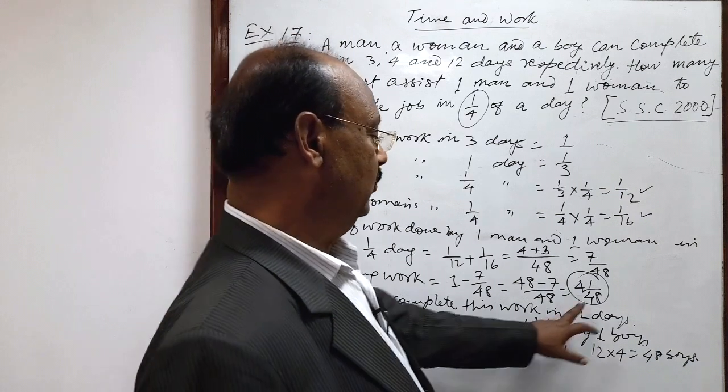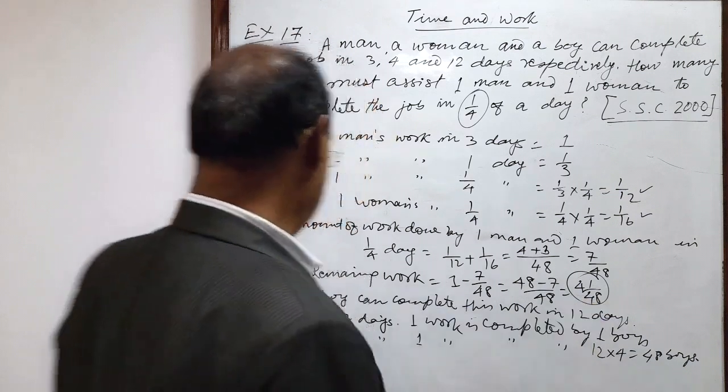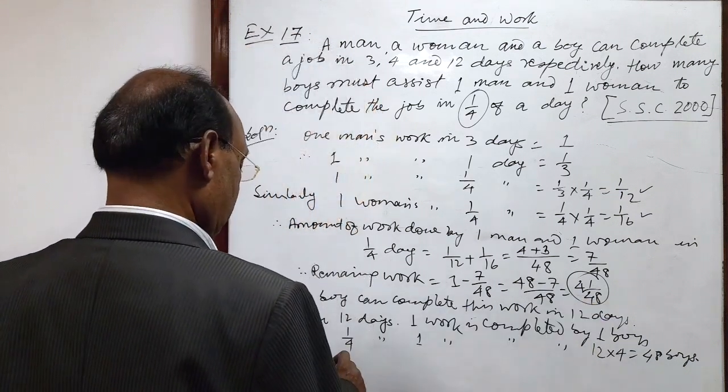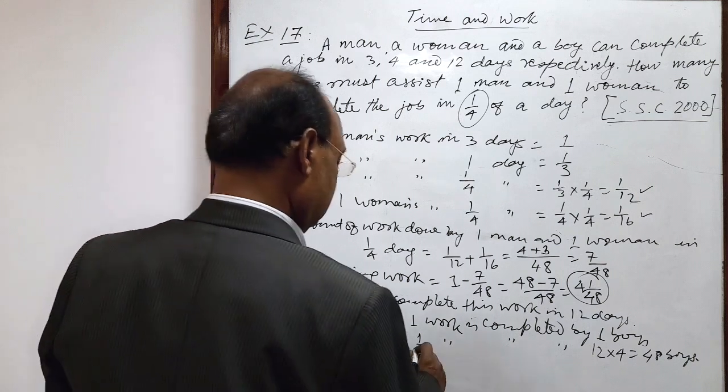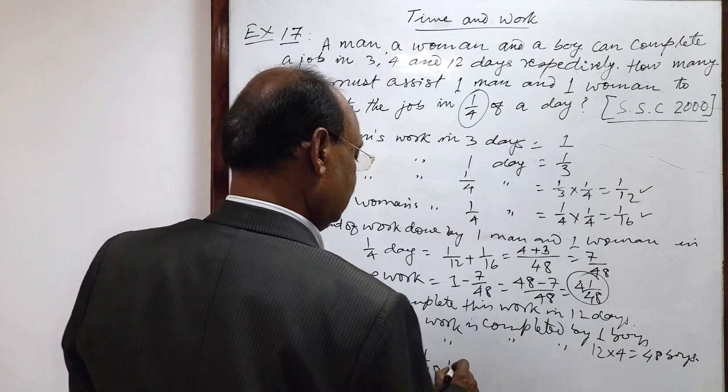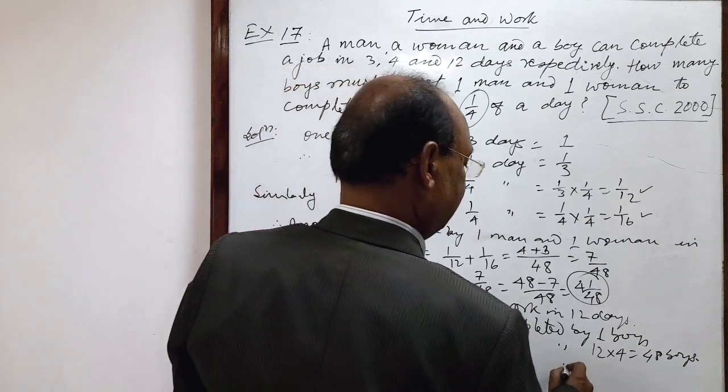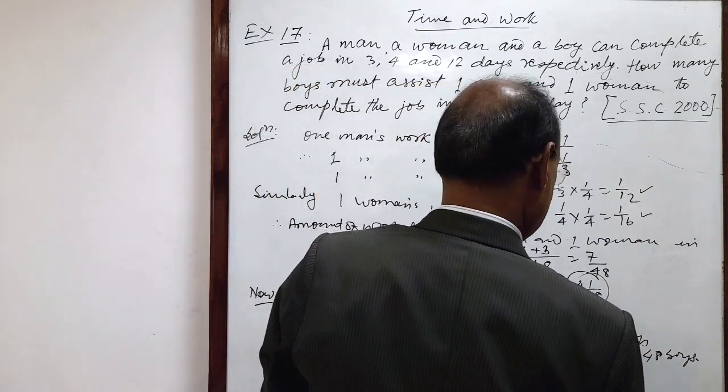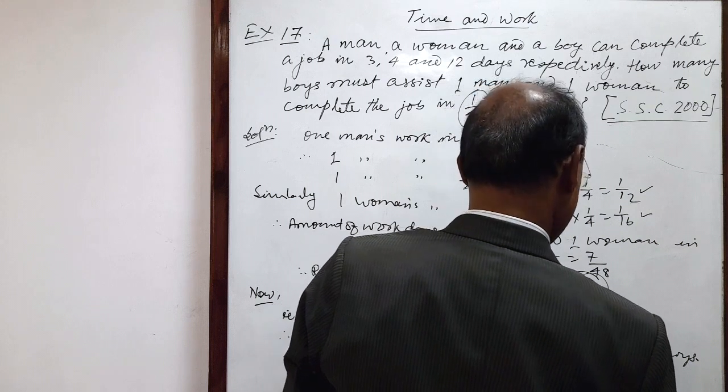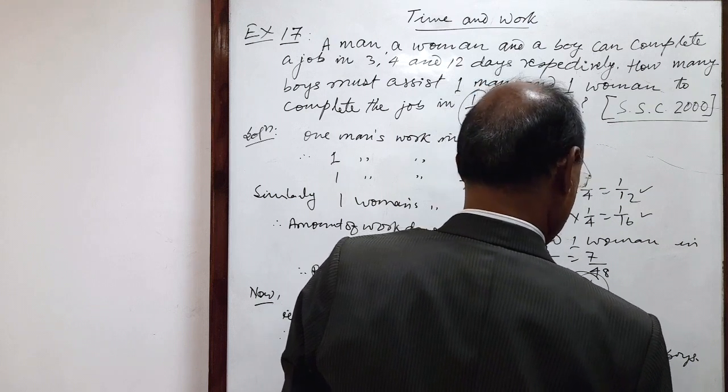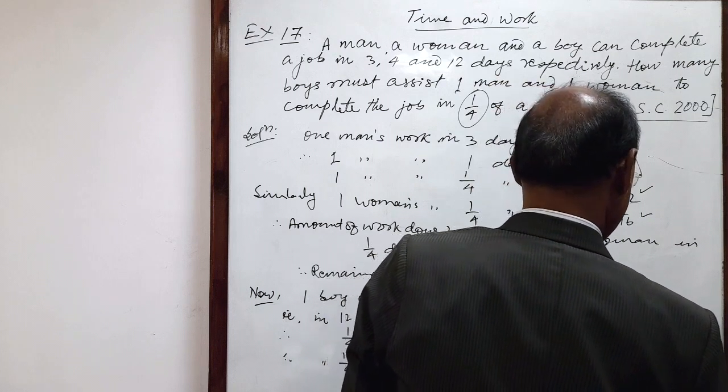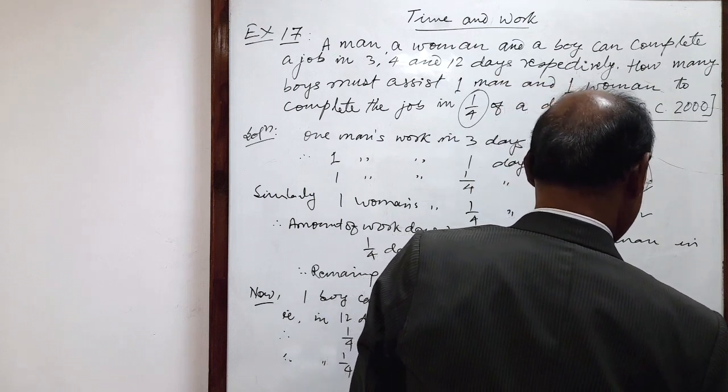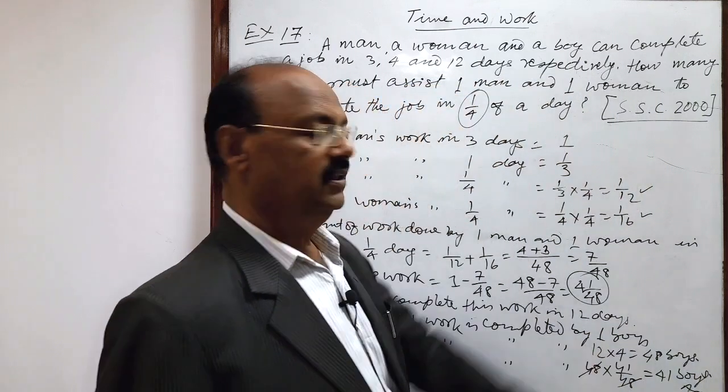But remaining work is 41 by 48, so therefore, in 1 by 4 days, 41 by 48 work is completed by 48 into 41 by 48, 48 is cancelled out, this is equal to 41 boys. This is the required number of boys, this is the answer.